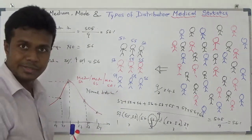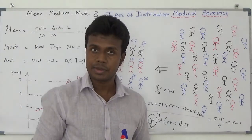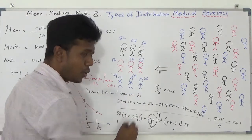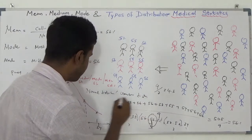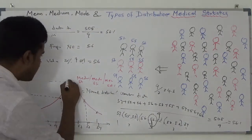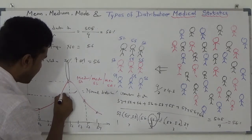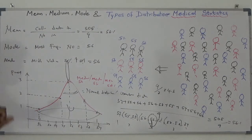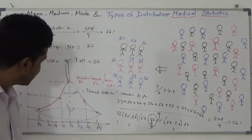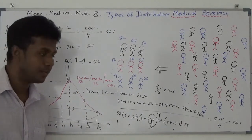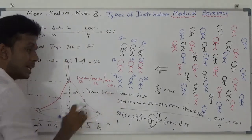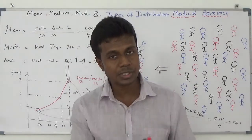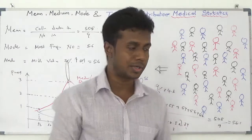This was discovered by Gaussian, I think — because of that we are going to call it a Gaussian distribution. Or if you add a handle and modify it slightly, it will look like a bell. So we refer to it as a bell-shaped curve. Normal distribution curve, bell-shaped curve, Gaussian curve — mode, median, and mean at the same position — all are referred to as normal distribution, the bell-shaped curve.